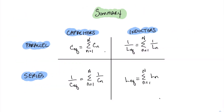In summary, we have four relationships. For parallel capacitors, the equivalent capacitance is the sum of all capacitances. For series capacitors, 1 over the equivalent capacitance is the sum of 1 over each capacitance. For parallel inductors, 1 over the equivalent inductance is the sum of 1 over each inductance. For series inductors, the equivalent inductance is the sum of all inductances. With this information, we can simplify any combination of parallel and series capacitor or inductor circuits. This concludes our video of Unwired Learning.